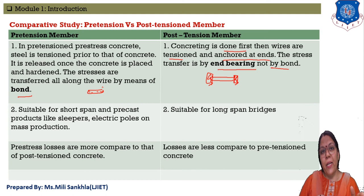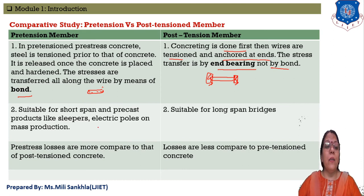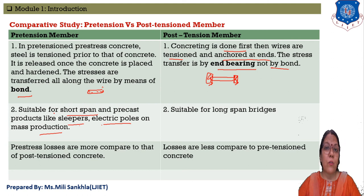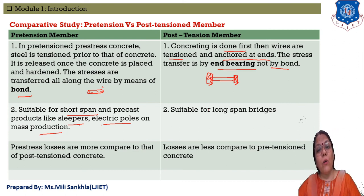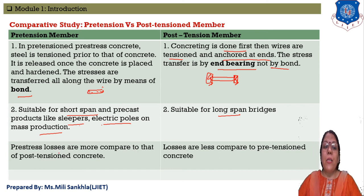In pre-tensioning, the tendon is stressed first, then cut, and stress is transferred by bonding from steel to concrete. In post-tensioning, the reverse process occurs — stress is transferred by end bearing, not bonding. Pre-tensioning members are suitable for shorter spans and mass production, such as railway sleepers and electric poles. Post-tensioning is used for longer spans like bridges.